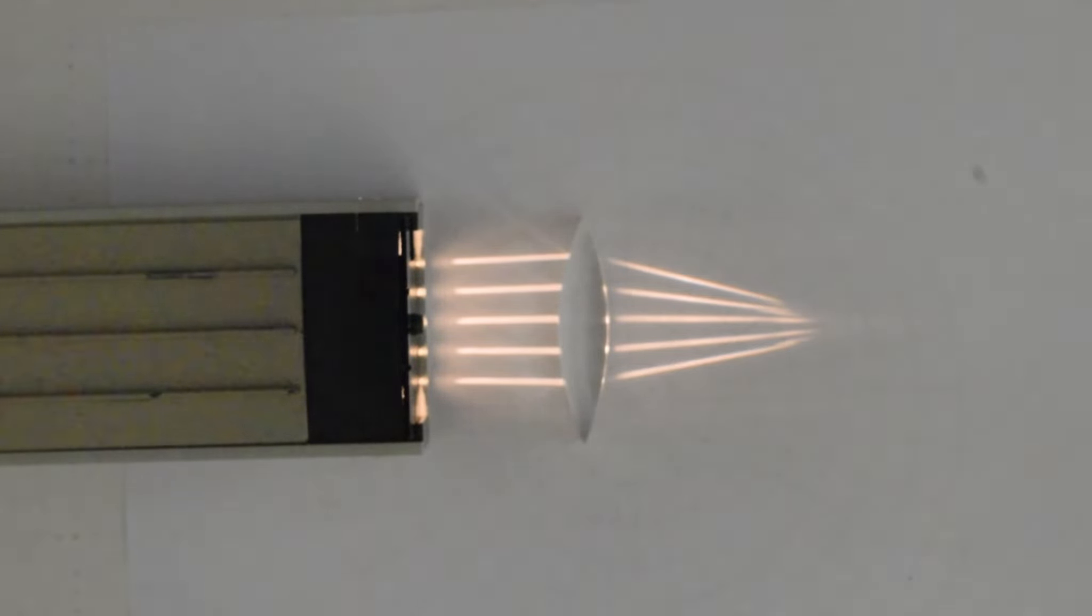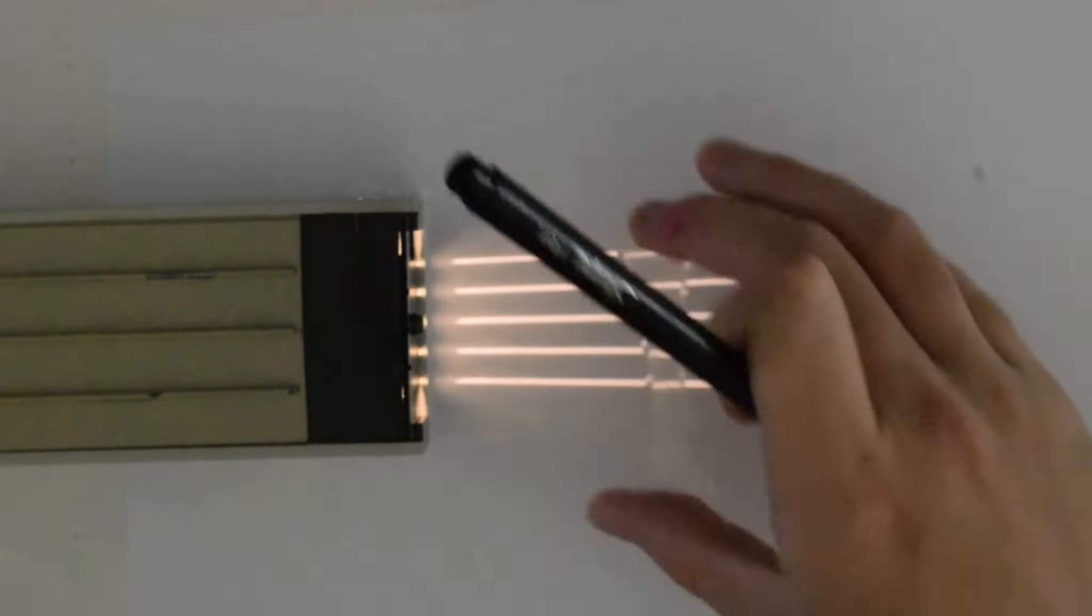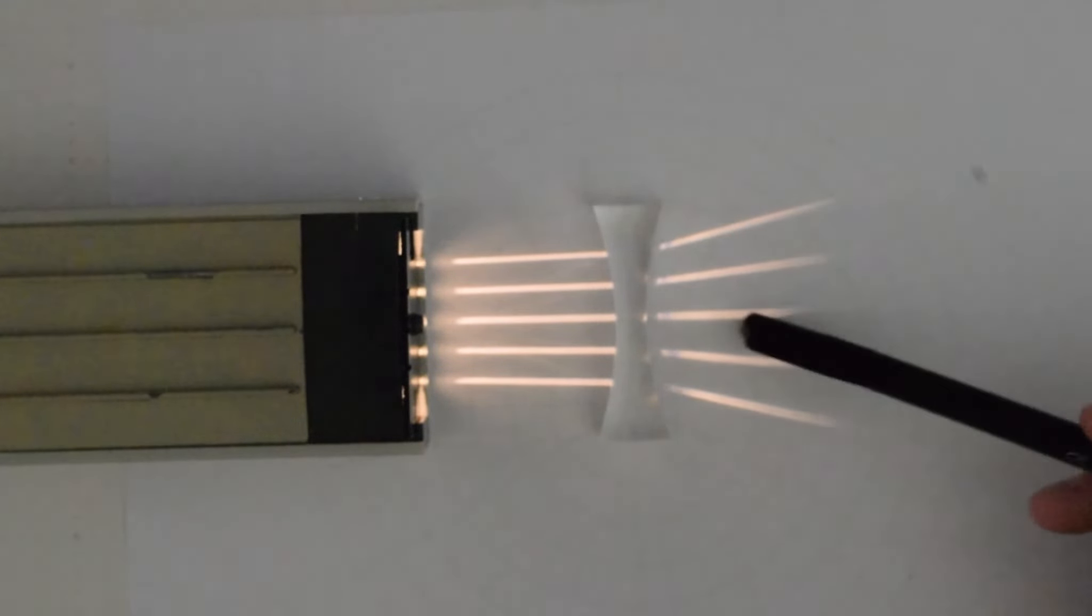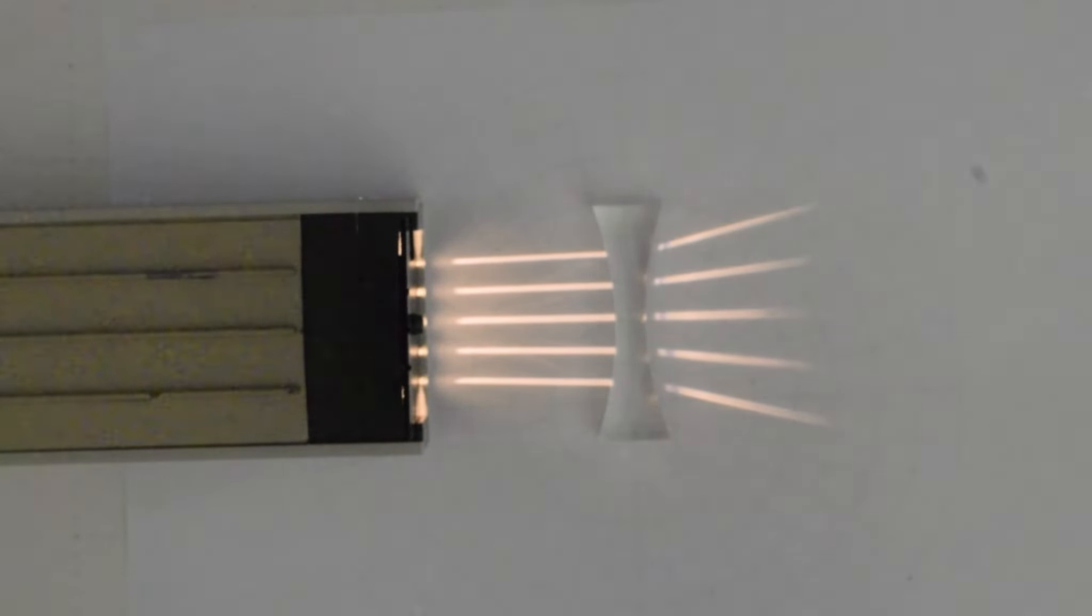The more difficult one is the concave lens, also known as a diverging lens. The reason it's more difficult is because the light rays, as you can see here, are not going to intersect at any given point. So we have to be a little bit creative.